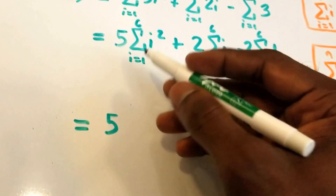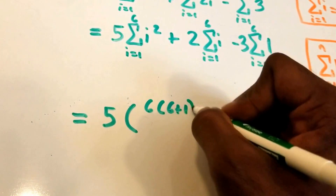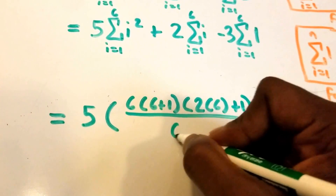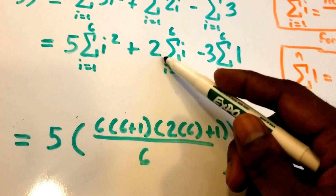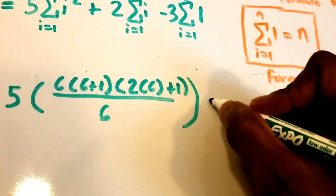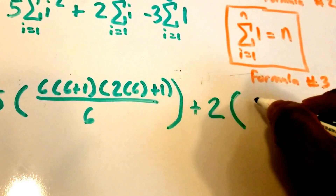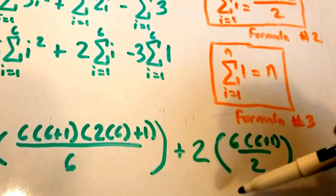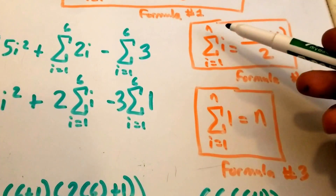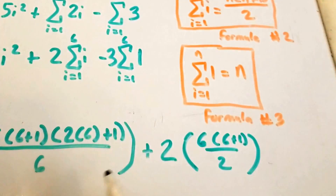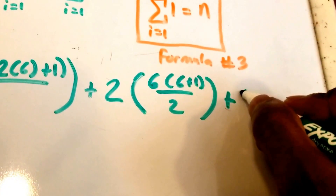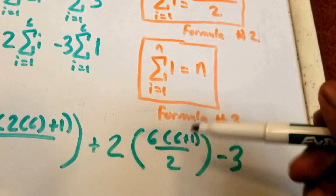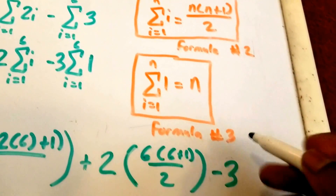So we get 6 times 7 times 13 all over 6. Then plus 2 times 6 times (6 plus 1) over 2, using the second formula and plugging in 6 for n. And last but not least, minus 3 times the summation from i equals 1 to 6 of 1, which using formula 3 just gives us 3 times 6.